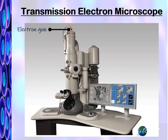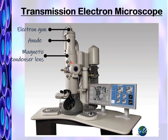This electron gun will emit electrons at high speed. Below that, we have the anode. And throughout this column here, we have magnetic condenser lenses.